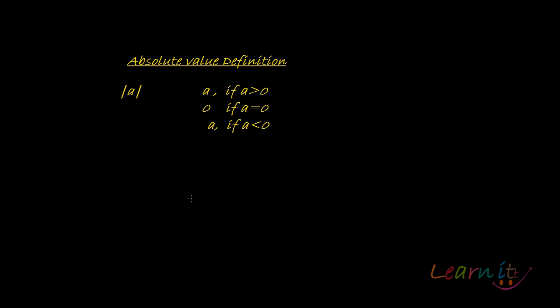Absolute value, or modulus, of any real number A is defined as follows: it is A if A is greater than 0, it is 0 if A equals 0, and it is minus A if A is less than 0. That is the definition of the absolute value of any real number.